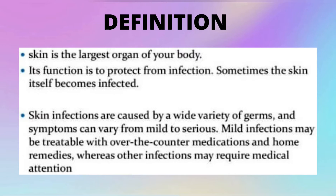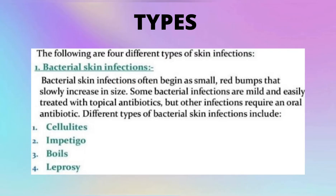Whereas other infections may require medical attention. We will talk about types — there are four different types of skin infection. The first type is bacterial skin infections. Bacterial skin infections often begin as small red bumps that slowly increase in size. Some bacterial infections are mild and easily treated with topical antibiotics, but other infections require an oral antibiotic. Different types of bacterial skin infections include cellulitis, impetigo, boils, and leprosy.